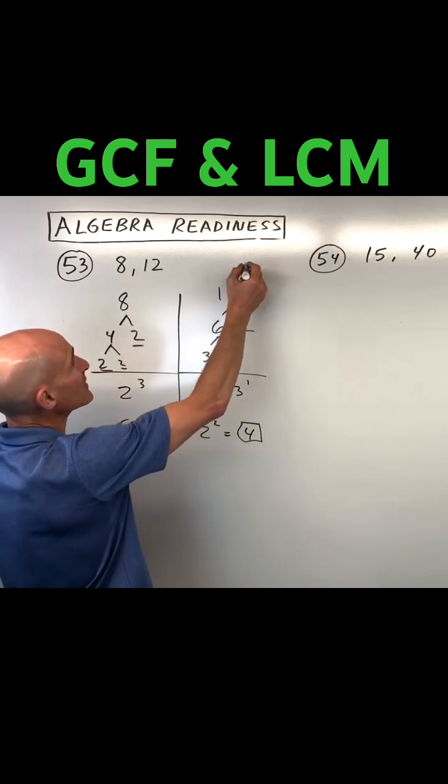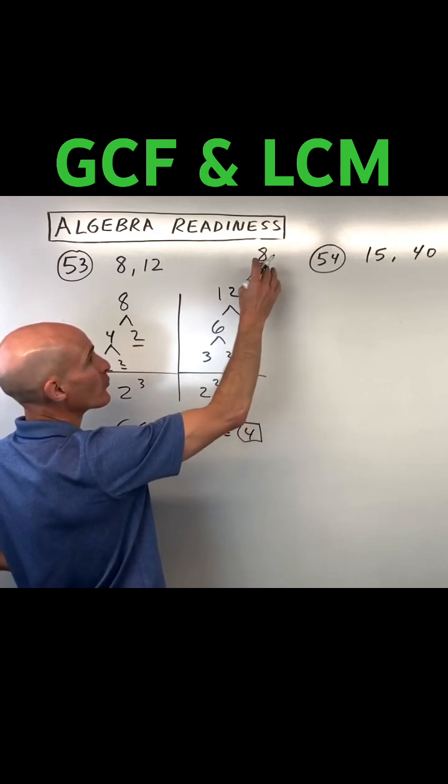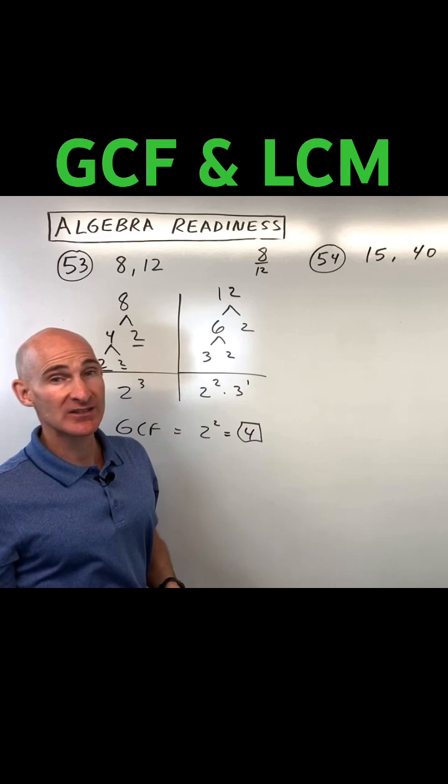So if you were reducing a fraction, like say if it was eight twelfths, you could divide the top by four, the bottom by four, and reduce that fraction with that greatest common factor.